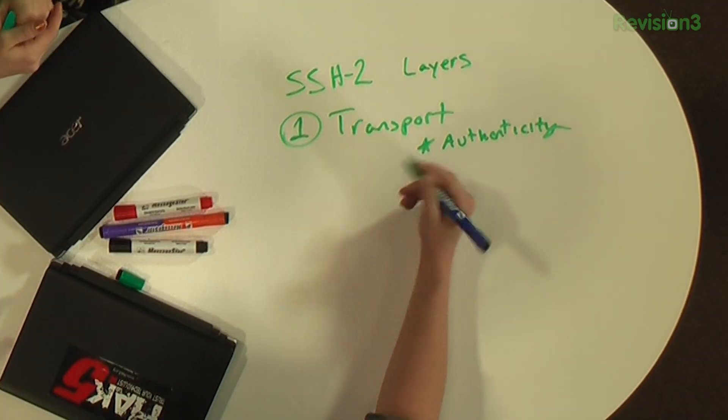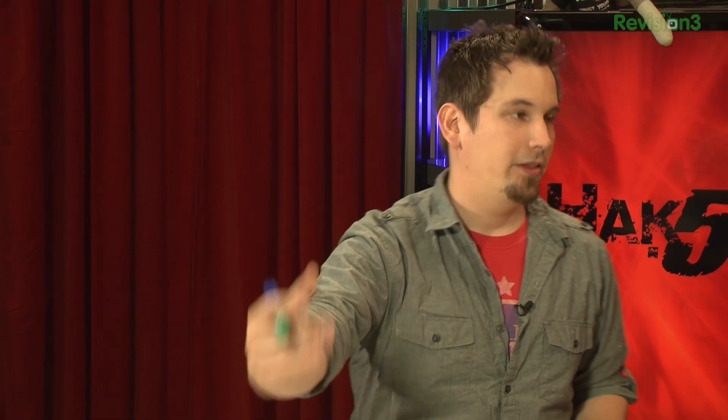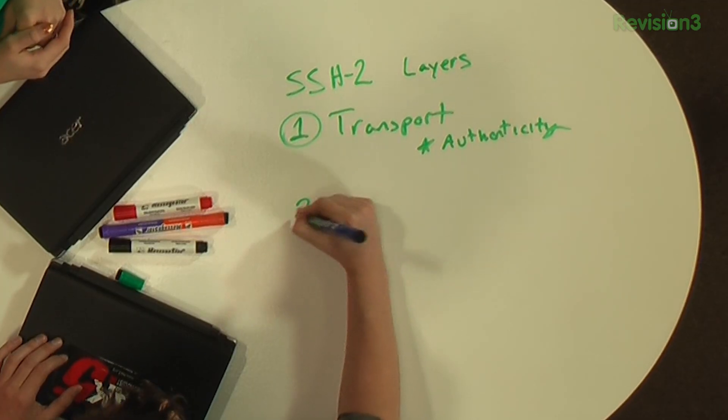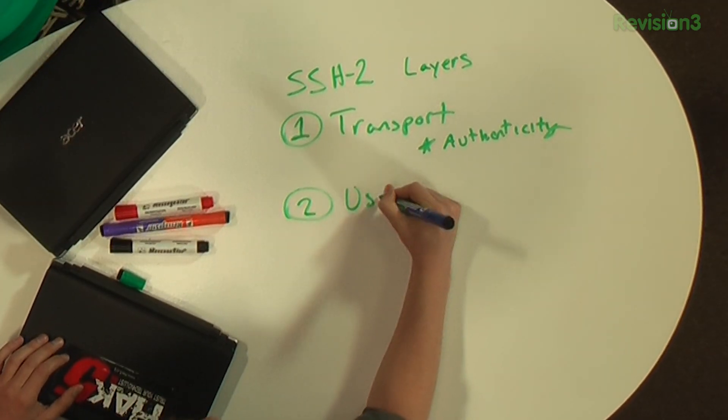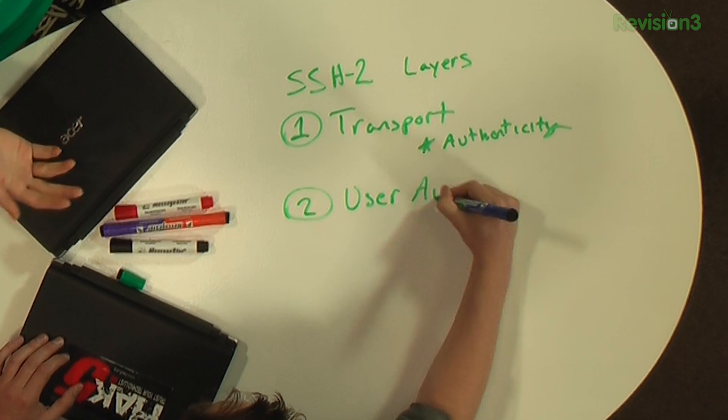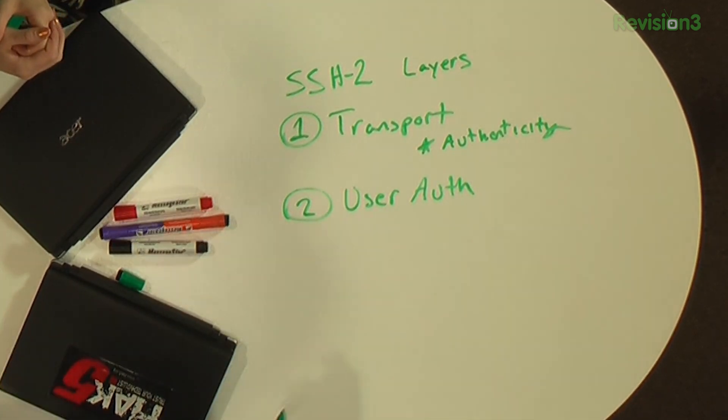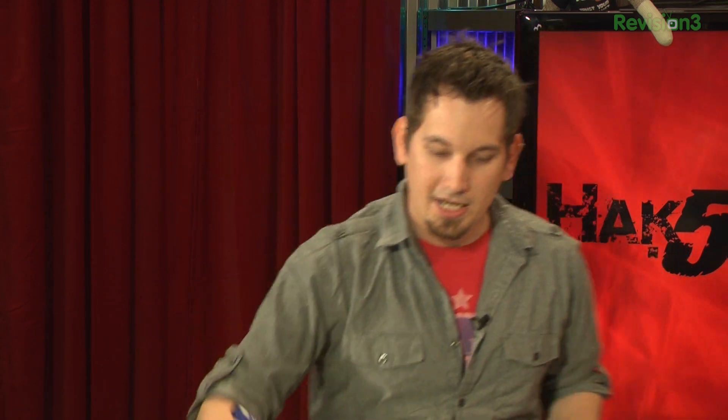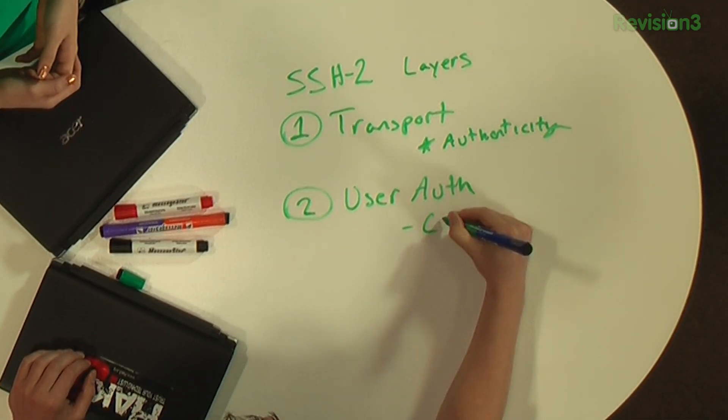The other layer is the user authentication layer. While the transport layer authenticates the server, this layer — layer two — is authenticating you, the user, the person signing in. The user authentication layer handles all sorts of client authentication requests, and the beautiful thing about authentication in SSH is that it is client-driven.